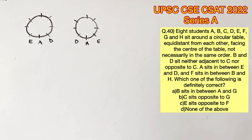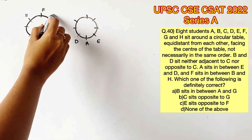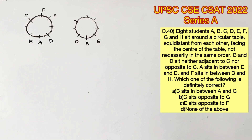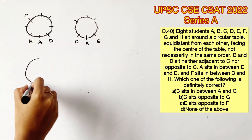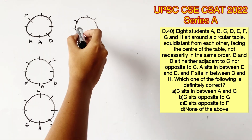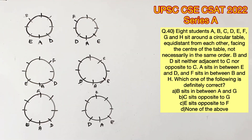Next, F sits in between B and H. There are three possibilities for F in the first circle, and three more possibilities for the second circle as well. The three possibilities are here, here, and here. So we're going to draw three different circles for these three possibilities, and two more circles for the second possibility as well. We have now jotted down all the possibilities.